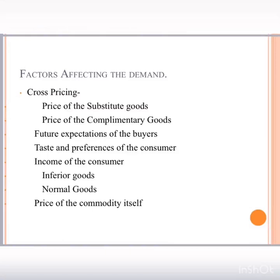Next is taste and preferences of the consumer. If taste and preferences are positive — meaning I like the commodity — I will purchase more and demand increases. If I dislike the commodity, I will not place an order and demand decreases. Next is income of the consumer. Under this there are two subheads: normal goods and inferior goods. For normal goods, if my income increases I buy more, so demand increases; if income decreases, demand decreases.